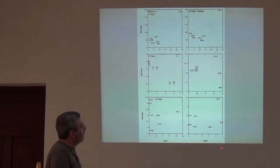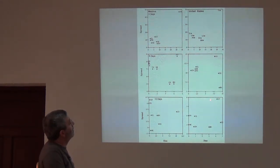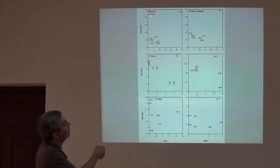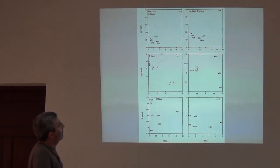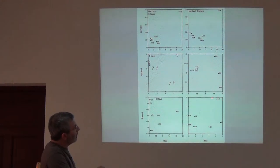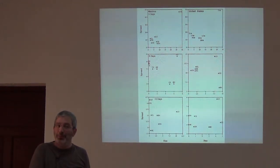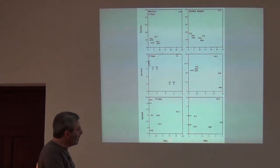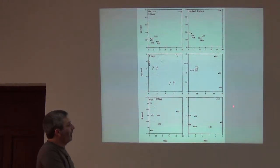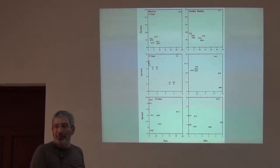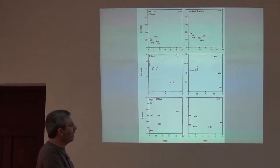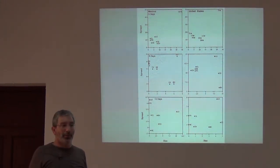What you can see is that — for example, this is Mexico and US — with only three days of data, with five days of data, and with ten days of data, with ten days of data in the US this method has both high spread, which is to say low precision, and high bias — low accuracy. So this is a very bad estimator. A very good estimator is going to be down here.